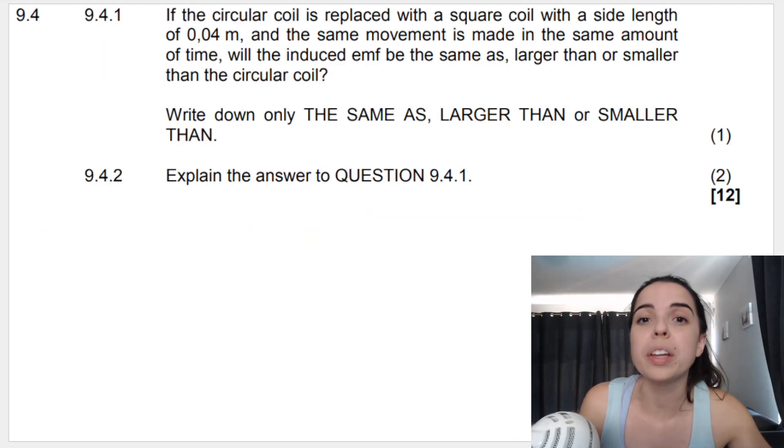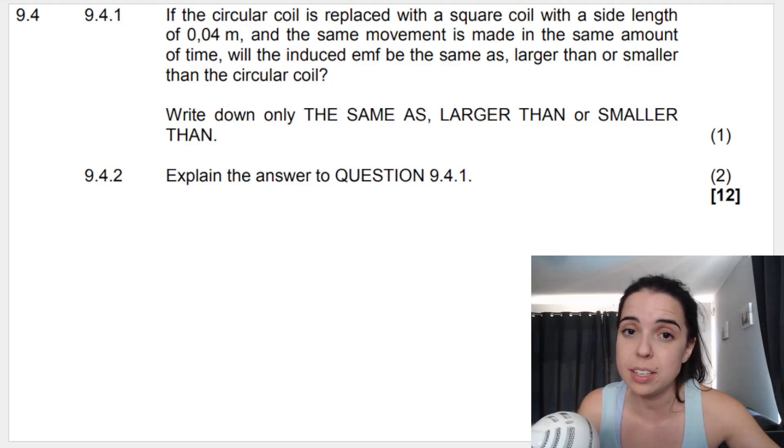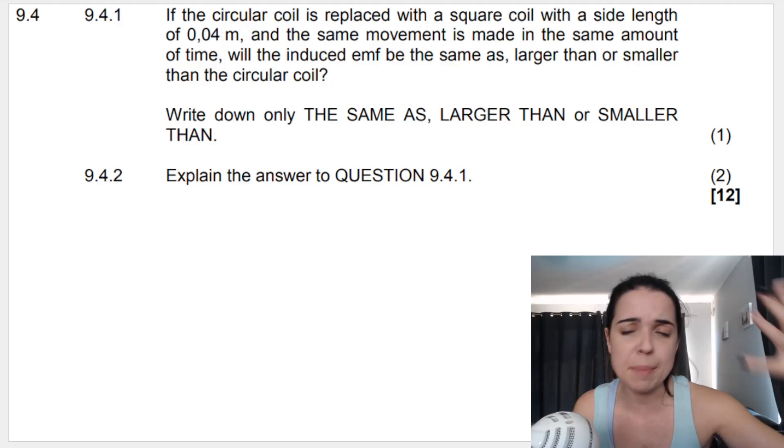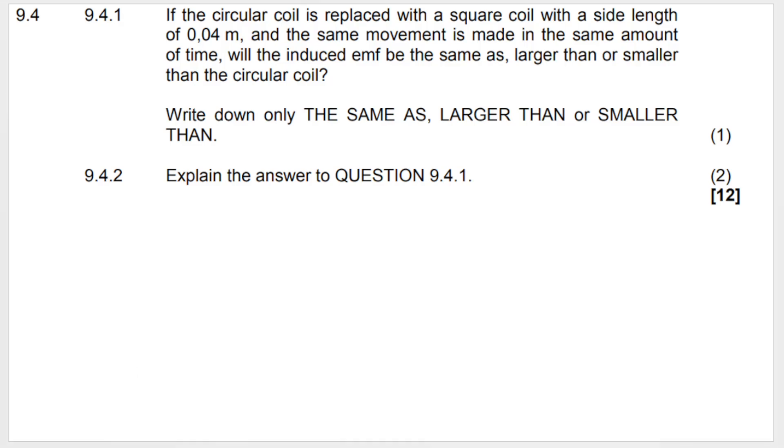9.4 says: if the circular coil is replaced with a square coil with a side length of 0.04 meters (remember, the circular coil had a radius of 0.04 meters), and the same movement is made in the same time, will the induced EMF be the same, larger, or smaller? You must explain. Think about what the shape affects: it affects the area of the coil. The circular coil area is π × 0.04². The square coil area is 0.04 × 0.04, or 0.04². Compare these areas - the square is just 0.04², but the circle is 0.04² times π.